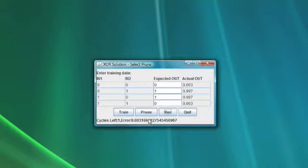Now we're going to click prune. Notice what happens when you prune. It's going to prune one neuron. It ran through all of the neurons that were in the hidden layers, and it determined that it was able to remove one.